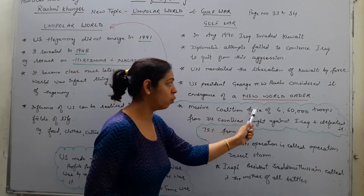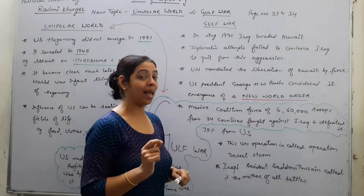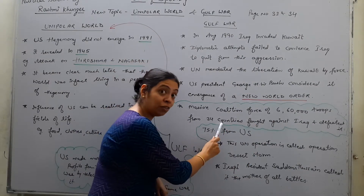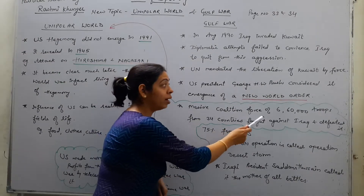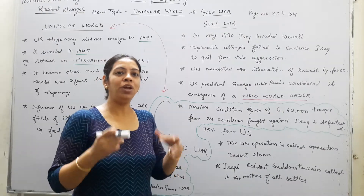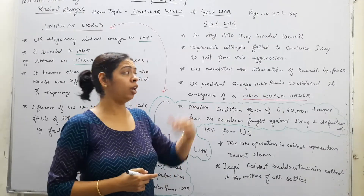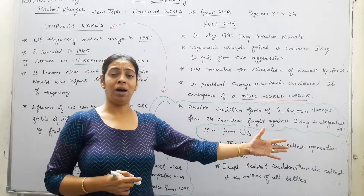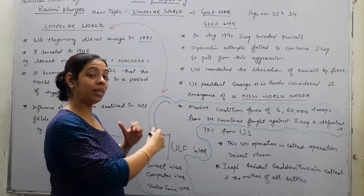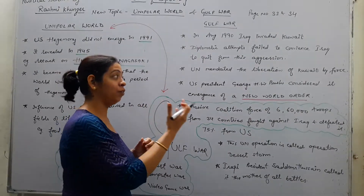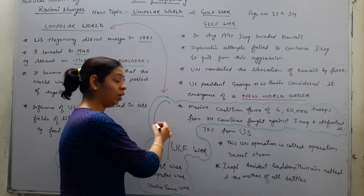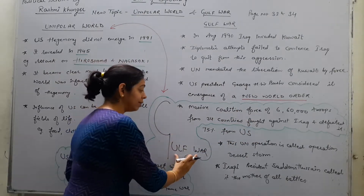A massive coalition force of 6,60,000 troops from 34 countries fought against Iraq and defeated it. It was a different kind of situation where so many countries were fighting for one country. The way they took this decision and fought against Iraq and defeated it is what is considered the Gulf War.